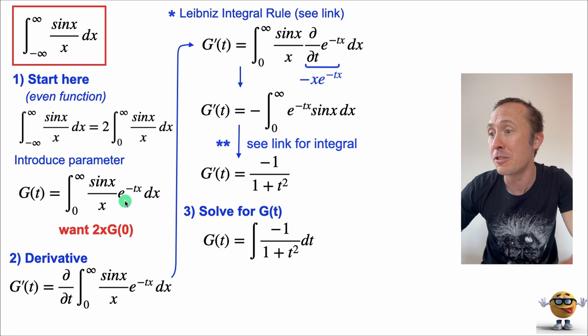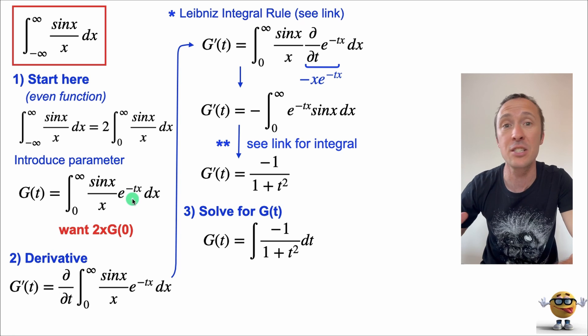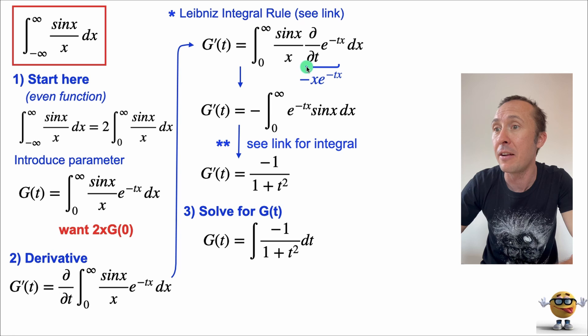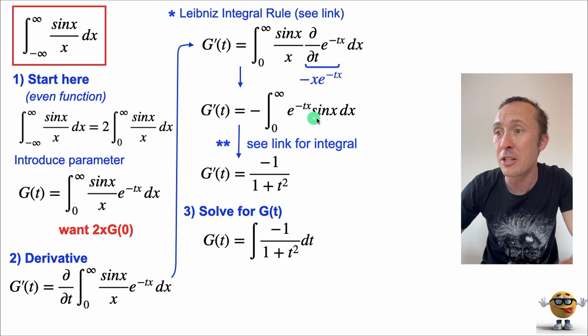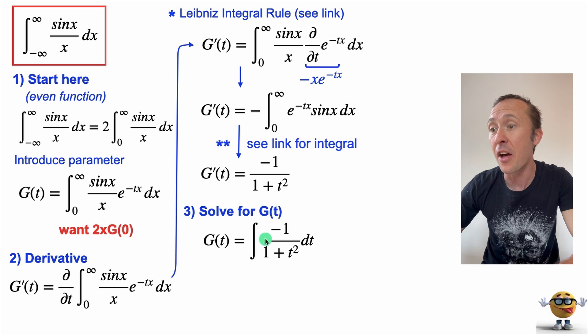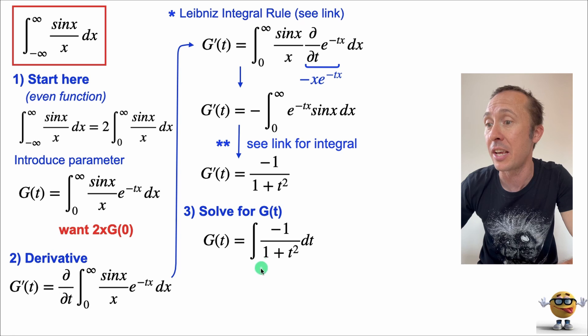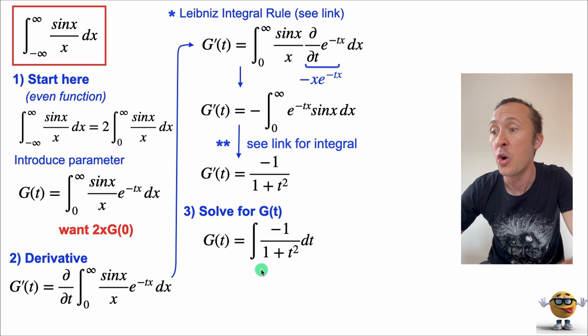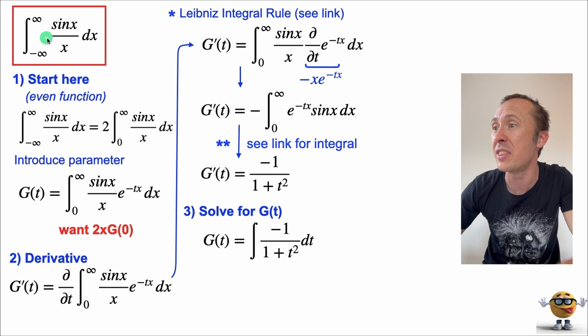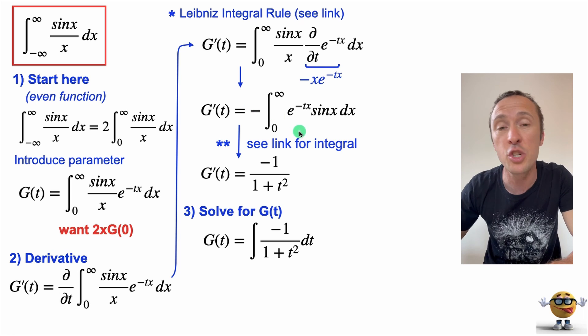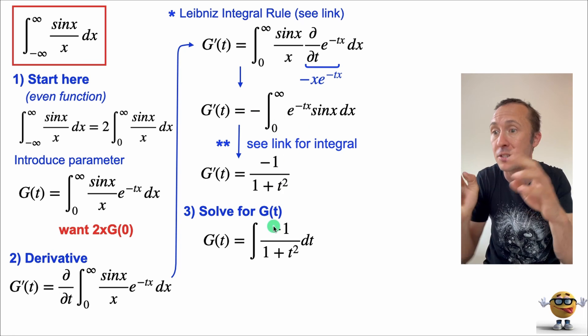And the goal, or the reason, we introduced this parameter t is so that after we take the derivative, right here, after we take the derivative, we can simplify this to an integral that we can solve with respect to x. And another one, another integral that we can solve or evaluate, I should say, another integral that we can evaluate with respect to t. So we've kind of turned this integral, the main integral that we're trying to do, into two, hopefully, easier integrals.